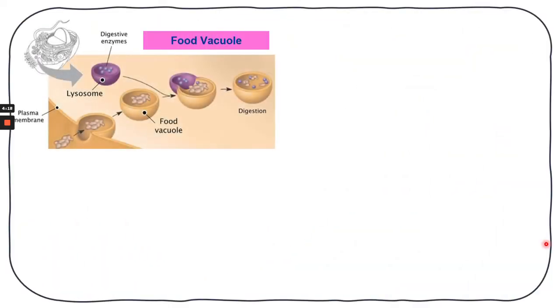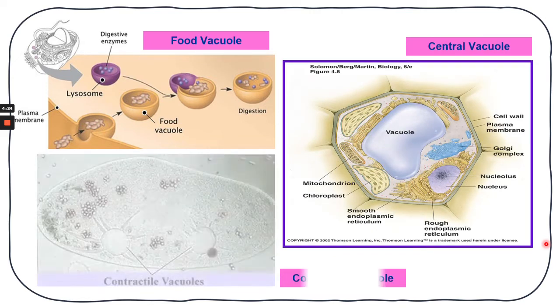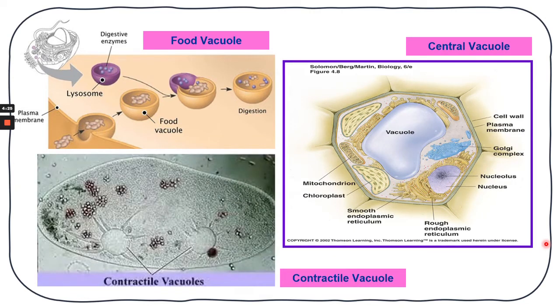This diagram shows the food vacuole, the central vacuole that only exists in plant cells, and the contractile vacuole.